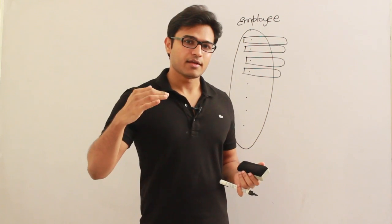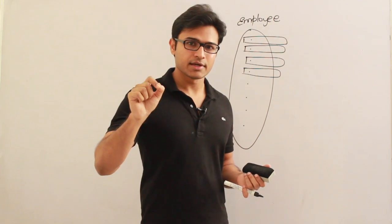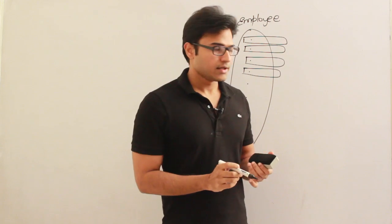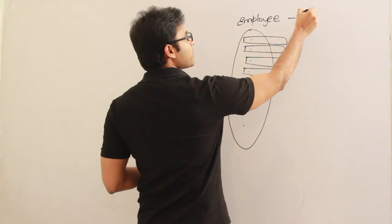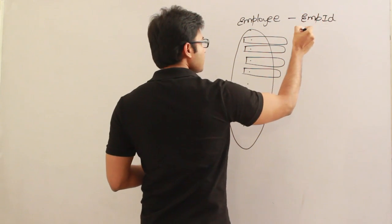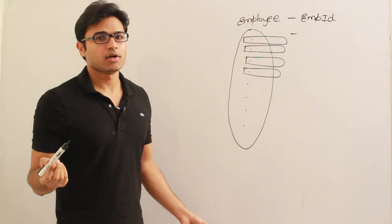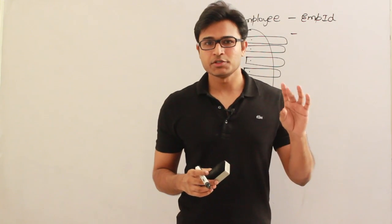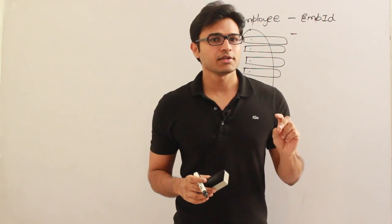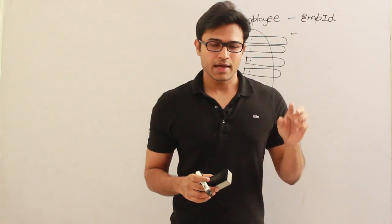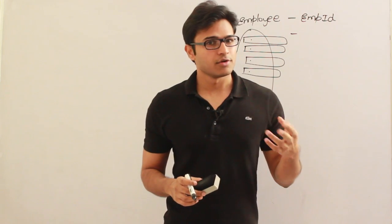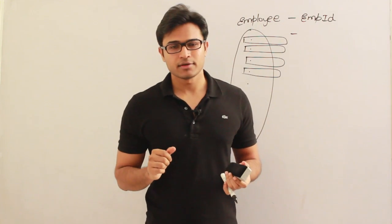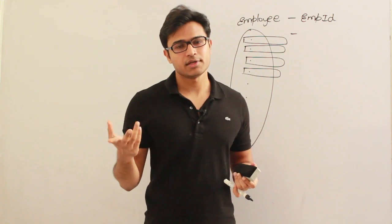Once we fix that key attribute, whenever we try to insert any new entity, we always check that the new entity should have a different value in that key attribute. Sometimes more than one attribute might qualify to become a key attribute. For example, a car will have a registration number and an engine number — engine number is given by the manufacturer and every car gets a unique one; registration number is given by the government and is also unique. As the database designer, you have the liberty to choose any one of them as the key attribute.